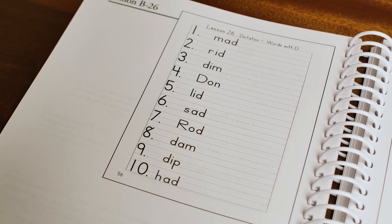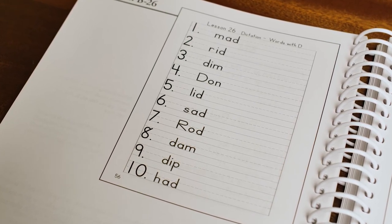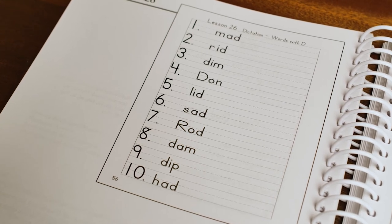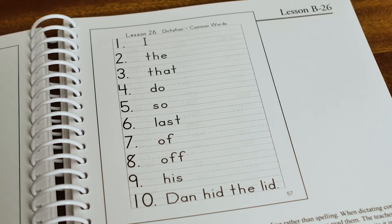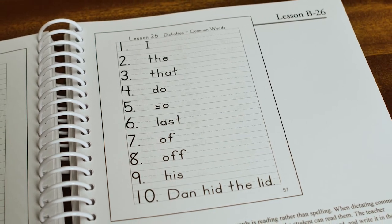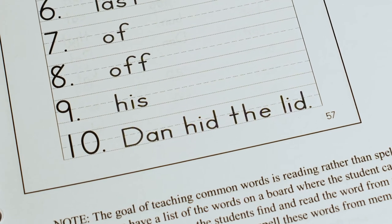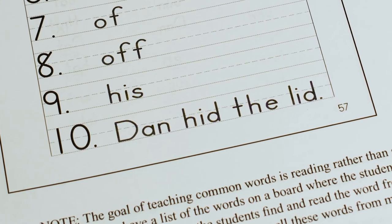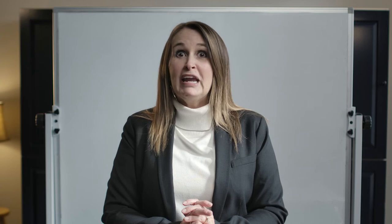The last sections are dictation. One dictation is of CVC, or consonant-vowel-consonant, words that the students can hear each sound to encode in the correct order. The other dictation is of common words. Dictation is not a spelling list in the traditional sense where the student has the list ahead of time and studies it to memorize the words — we want the student to hear, discern, and write. The last entry of the CVC dictation is a sentence made up of those CVC words and possibly a simple common word. Since sentence end marks are dependent upon the reader's expression, be sure you are over-enunciating and adding plenty of expression when dictating the sentence.